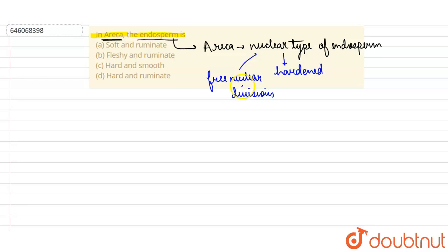to produce this nuclear type of endosperm, later on they arrange themselves towards the periphery of the embryo sac. And basically, this type of endosperm later